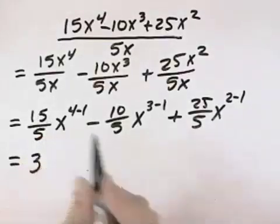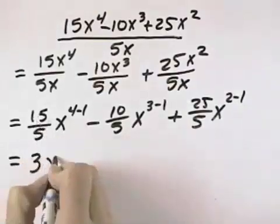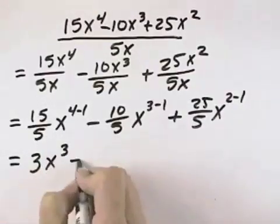Fifteen divided by 5 is 3, and x to the 4 minus 1 is the third power.